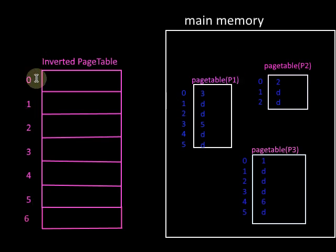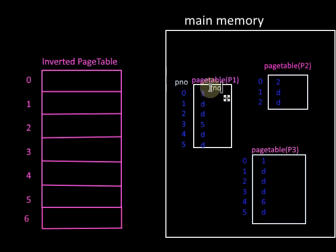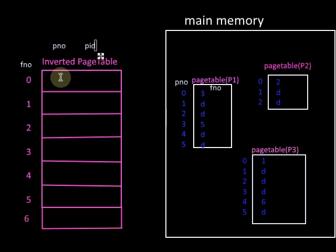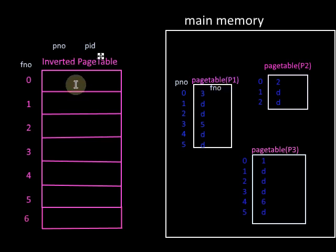In a normal page table the page number acts as an index, but in the inverted page table the frame number is the index. Each entry contains the page number and the process identifier, because since we are using a single page table for all processes, we must identify which page of which process is loaded into each frame of main memory.